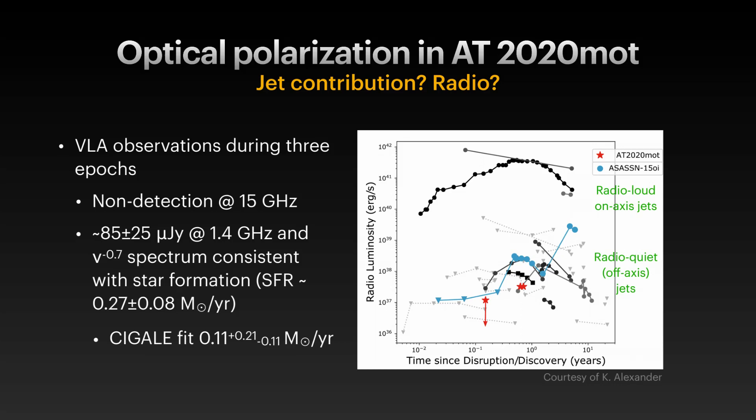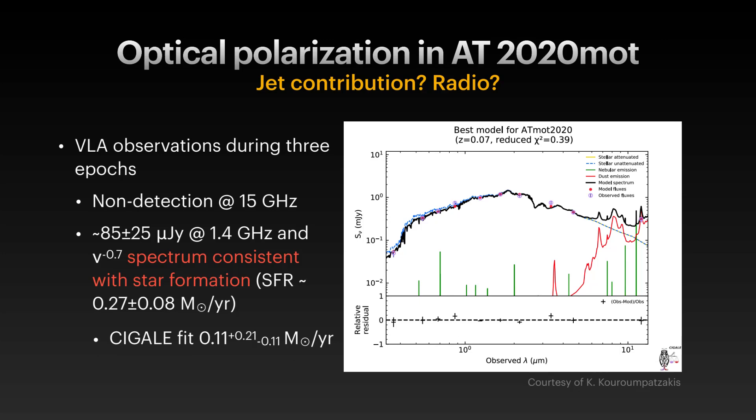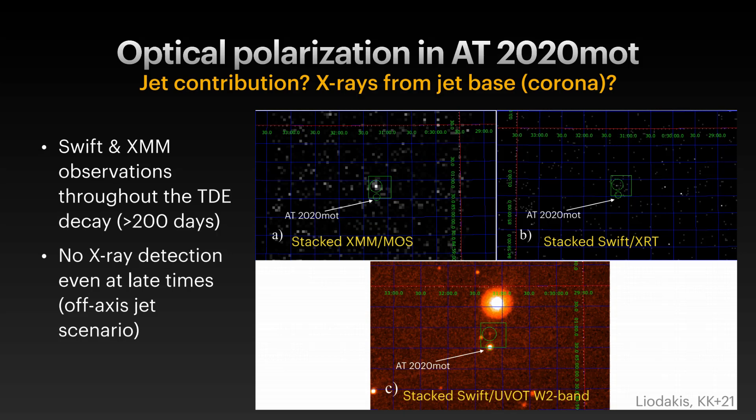This plot collects all known radio emission from TDEs, showing two categories: very radio-loud ones where the jet is probably pointing toward us, and radio-quiet ones where emission comes from star formation or from a jet that turns on later, as in ASASSN-15oi, or possibly an off-axis jet. We later detected our source at softer frequencies around 4 GHz, but this value is very low — among the lowest of radio-quiet TDEs — and we can actually fit it with just star formation from the galaxy, not from the TDE itself.